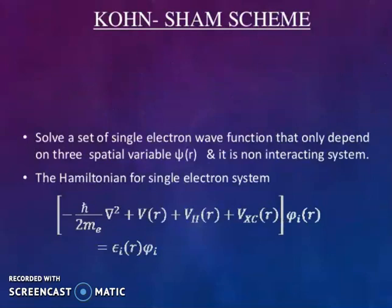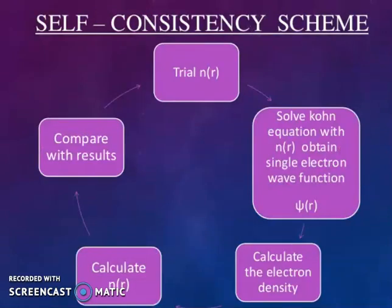Kohn-Sham scheme: solve a set of single electron wave functions that only depends on three spatial variables, functions of psi(r), and it is a non-interacting system. The Hamiltonian for the single electron system is -h²/2me del² + V + Vh and so on. Self-consistency scheme: trial, solve Kohn equation with n(r), obtain single electron wave function psi(r), calculate the electron density. Starting with calculate first n(r) and then compare with results.